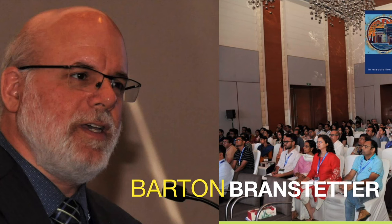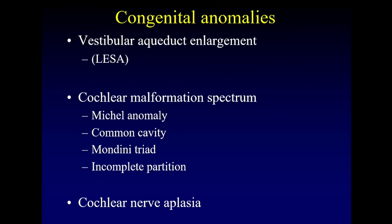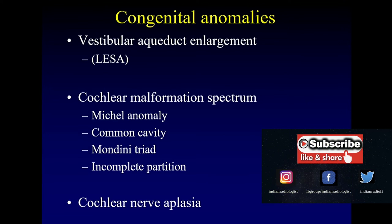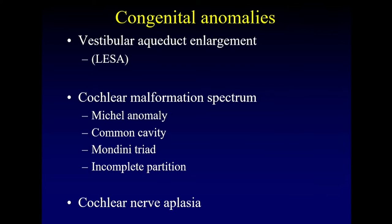The most common congenital anomaly that we encounter in the inner ear is the vestibular aqueduct enlargement, sometimes called the large endolymphatic sac anomaly. This is the most common abnormality, and as long as you are looking for it, you'll have no difficulty finding it. There is also a spectrum of abnormalities that affect the cochlea and vestibule. We like to give names to specific points along this spectrum, but it's important to understand that it's a continuous spectrum of abnormalities.